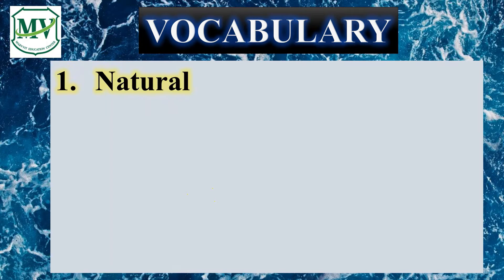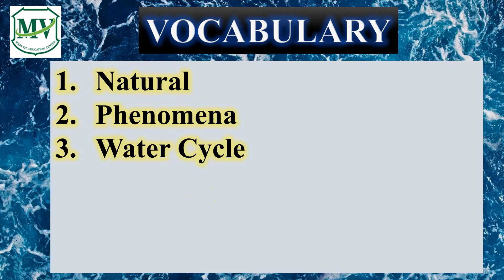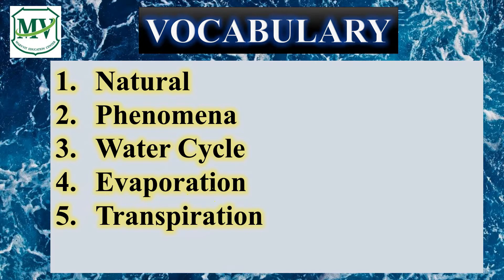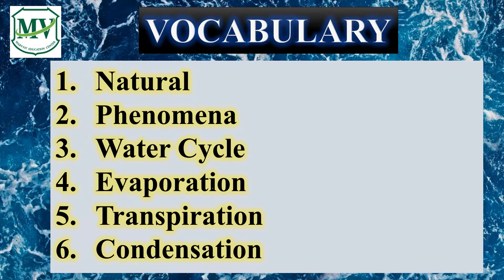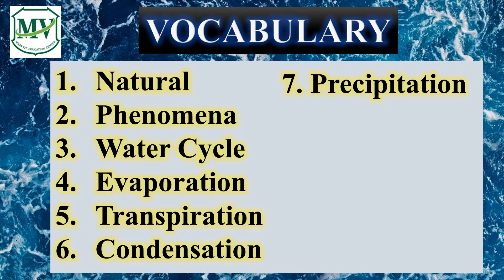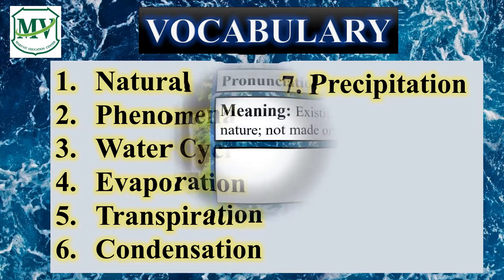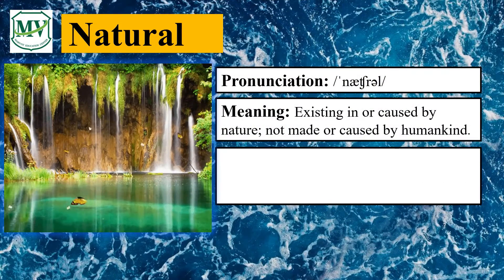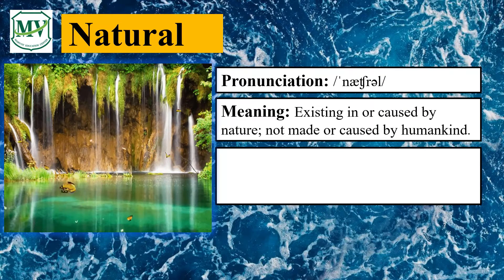Number 1: Natural. Number 2: Phenomena. Number 3: Weather Cycle. Number 4: Evaporation. Number 5: Transpiration. Number 6: Condensation. And lastly, number 7: Precipitation. Let's learn more about each word. Are you ready, students? For our first word, let's say the word: Natural. Very good! Can you say the word by yourself? Excellent!